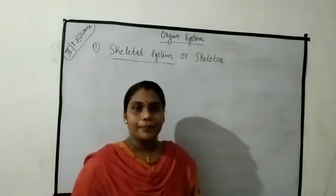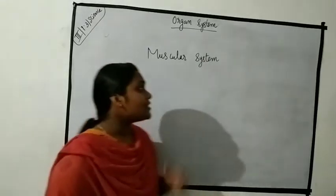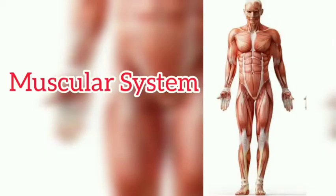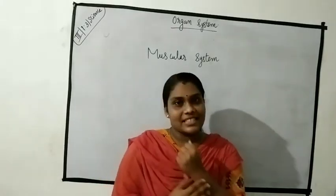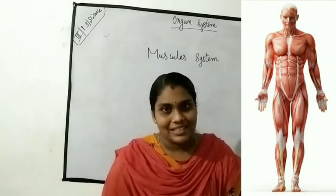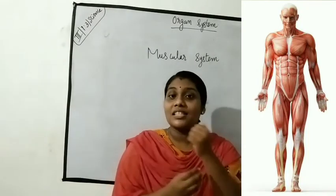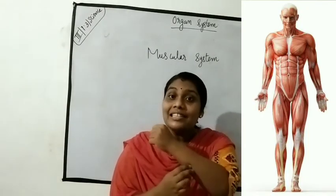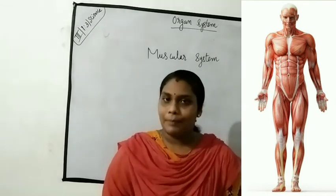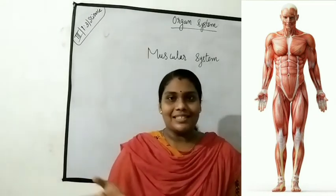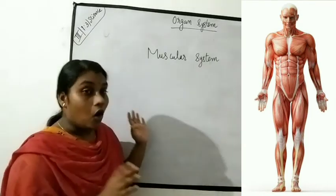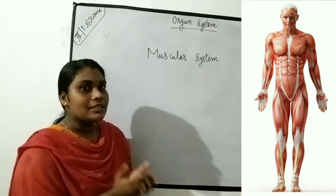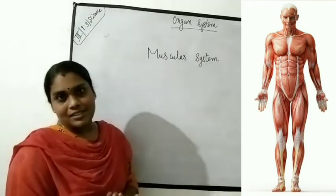The next system is the muscular system. The soft parts under the skin are called muscles. All the muscles together form the muscular system.